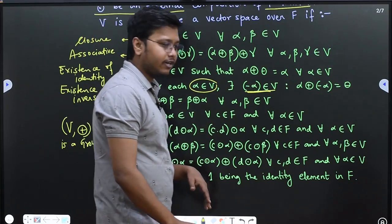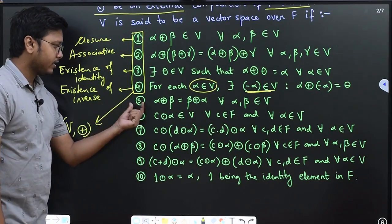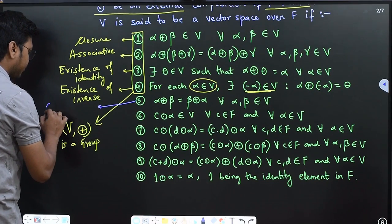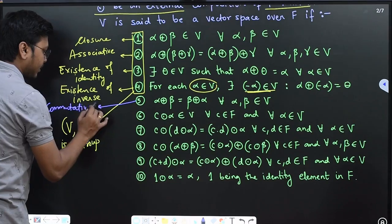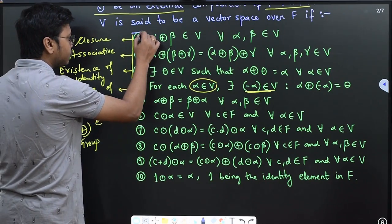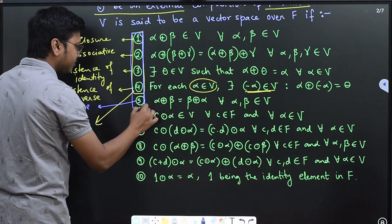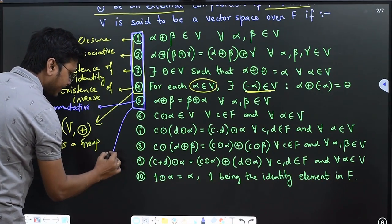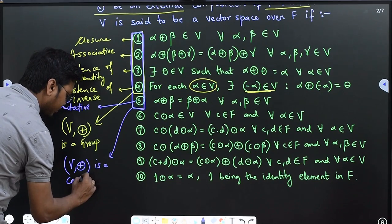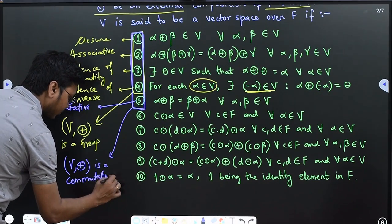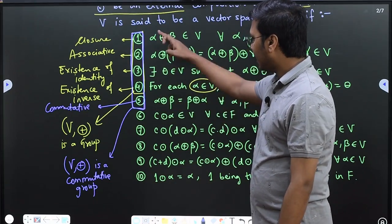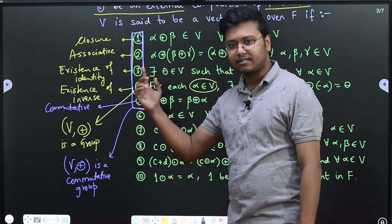Property number 5 is simply the commutative property: alpha plus beta equals beta plus alpha. If we combine properties 1 through 5, we can say that V with respect to the binary composition plus is a commutative group. So for a set to be a vector space, it first has to be a commutative group with respect to the binary operation.